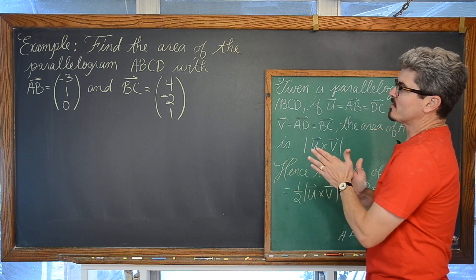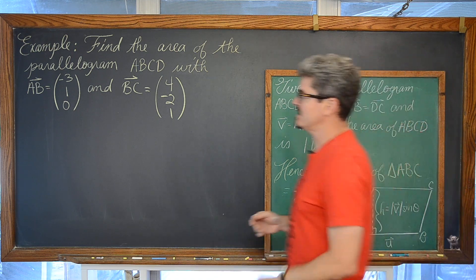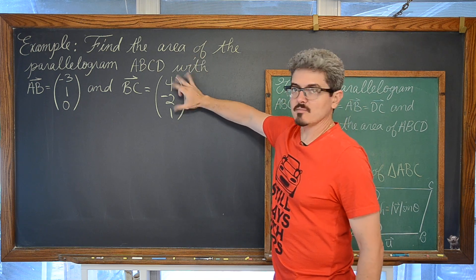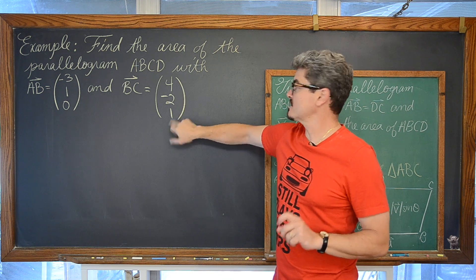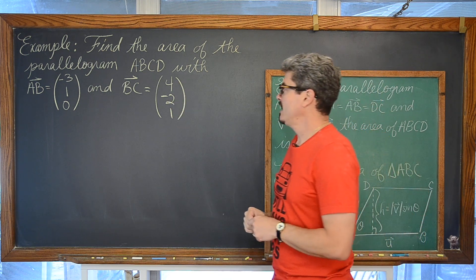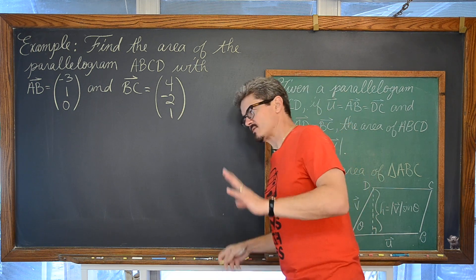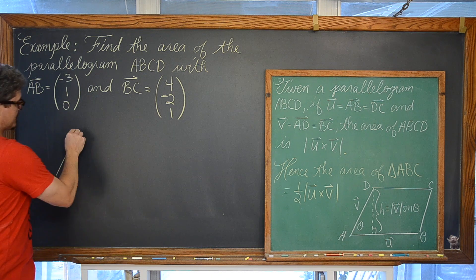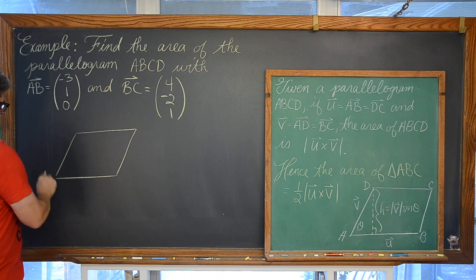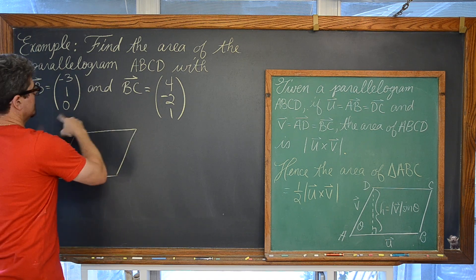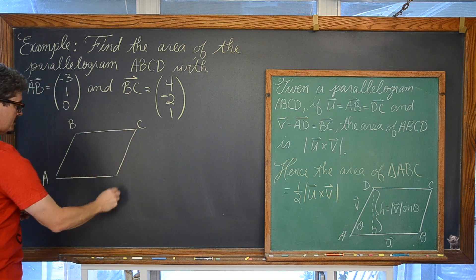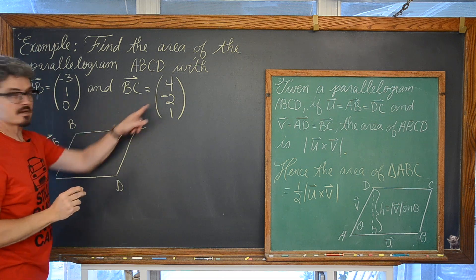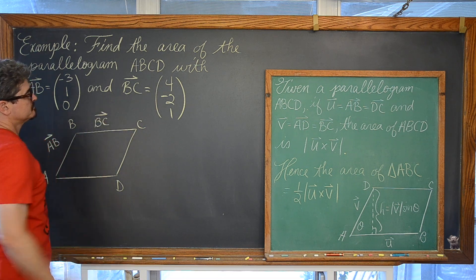Our example: we are going to find the area of parallelogram ABCD with vector AB defined as the three dimensional vector negative 3, 1, 0, and vector BC in component form with values 4, negative 2, and 1 along the x, y, and z directions. I am not going to draw this in exact three dimensional space — that would be really difficult on this flat chalkboard — but just to give something to look at, we have points A, B, C, and D defined by these two vectors.